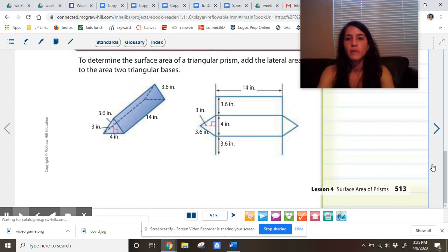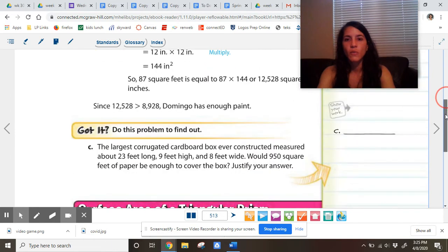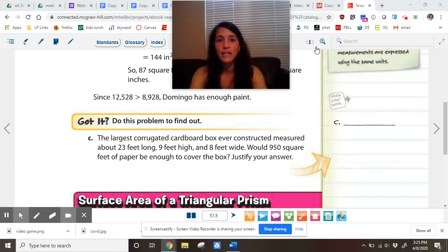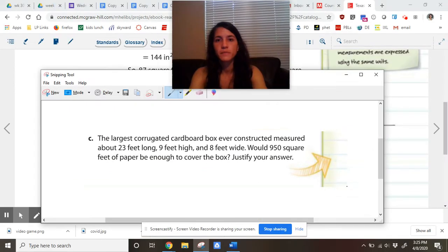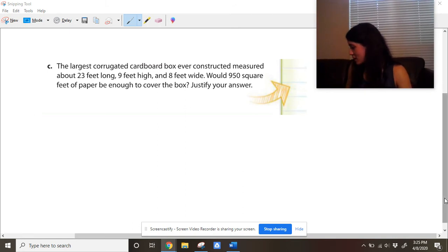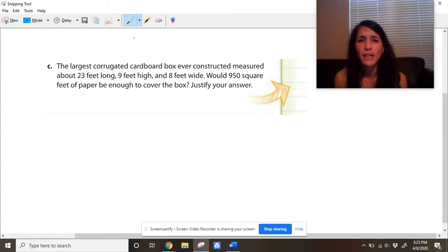There's a multi-step problem that was done for you, and all of it's worked out. So we're just going to go to got it C because I don't need to read that. You can read that if you would like. So I'm just going to cut C out. And this is multi-step. So it sounds like it's got a lot of different parts. The largest corrugated cardboard box ever constructed measures about 23 feet long, 9 feet high, and 8 feet wide. Would 950 square feet of paper be enough to cover the box? Justify your answer.